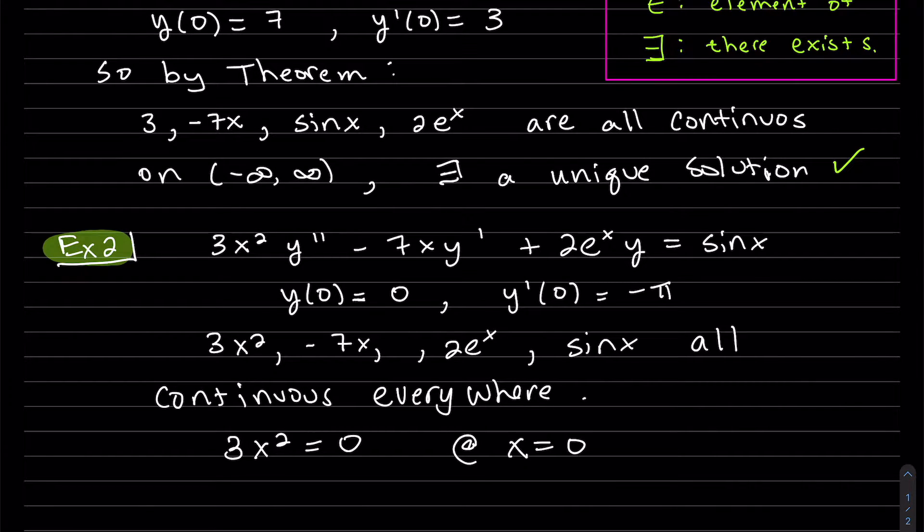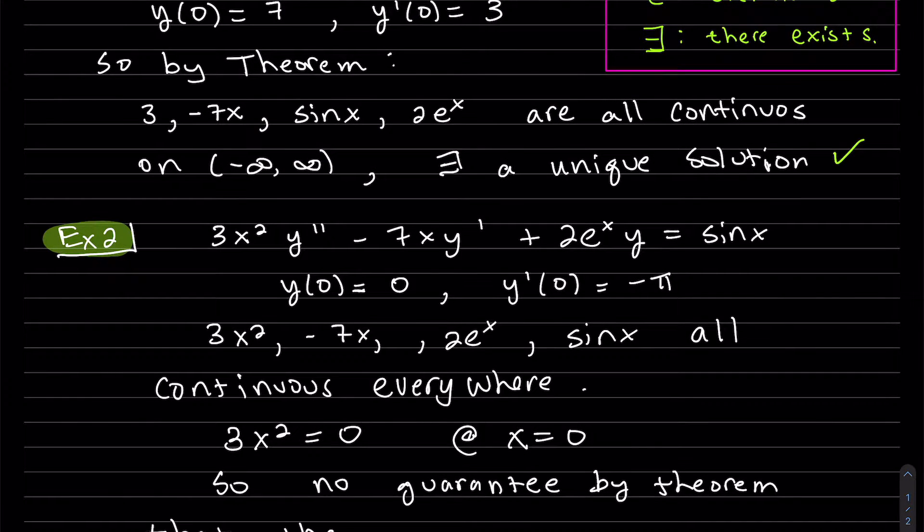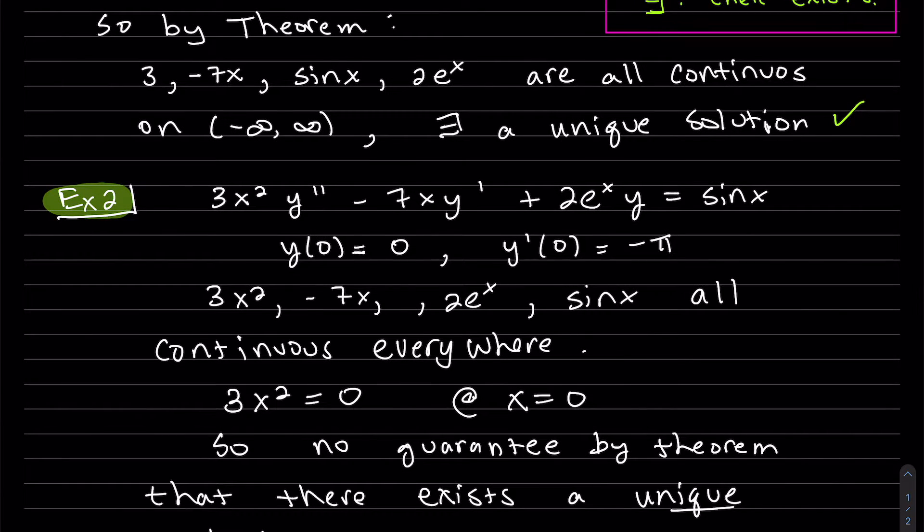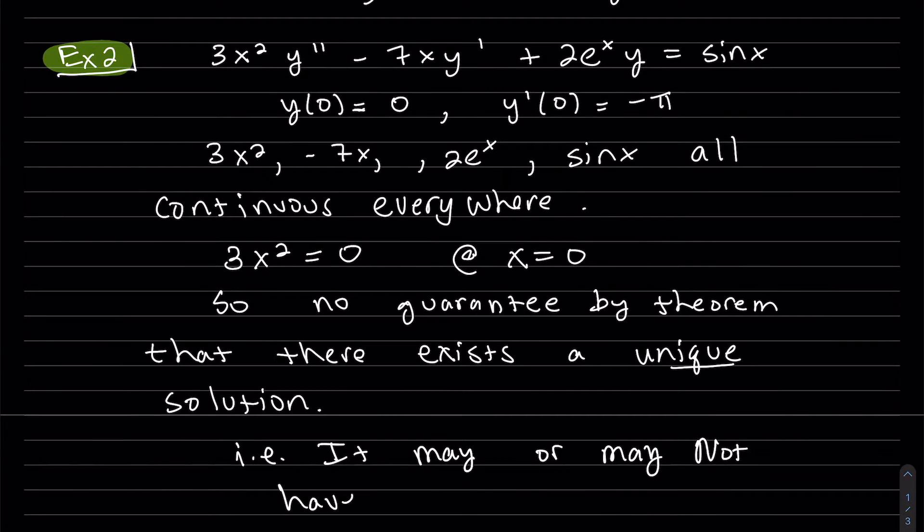There could be two solutions, or no solutions. So just this last thing that I am pointing out. It might have a unique solution or it might not have. There's just not a guarantee to one. That's all it's saying.